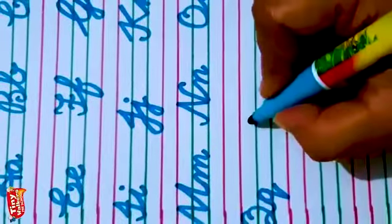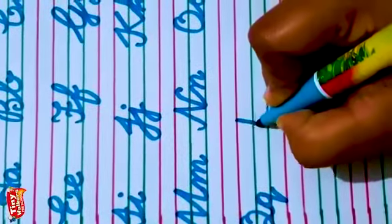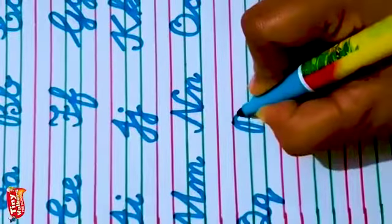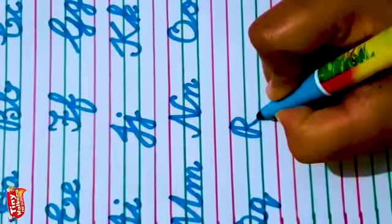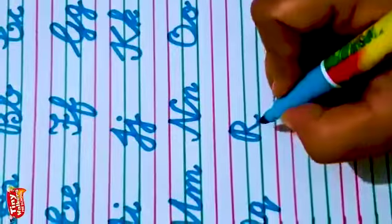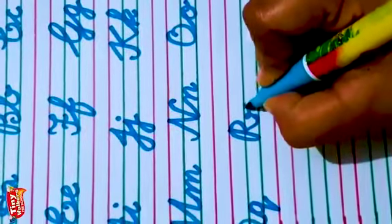Now see how to write R. Like P, then make a slanting line. This is capital cursive R. From here, go up. This is small r.